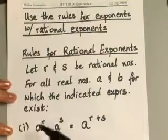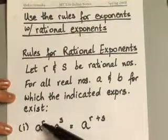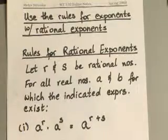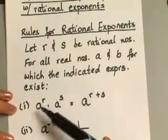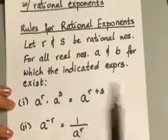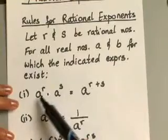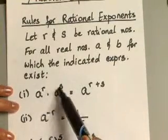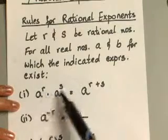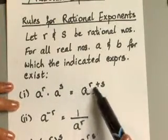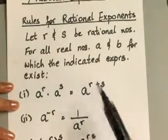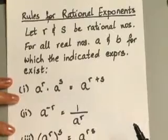Now, the rules for rational exponents — we'll assume that exponents r and s are rational numbers, which means they're fractions, and all bases a and b are real numbers. Any time you have the same base multiplied together with different exponents, you go ahead and add your exponents. The base stays the same; you just add your exponents, r plus s.